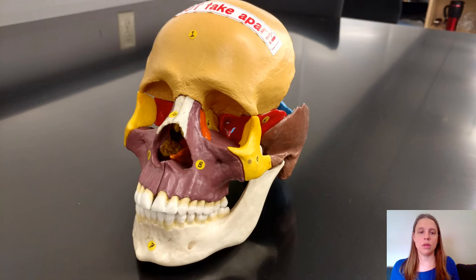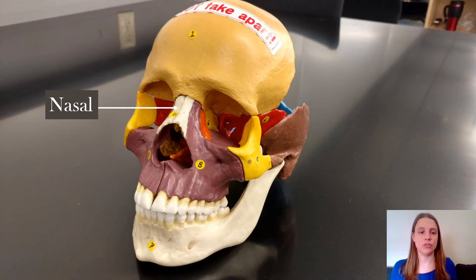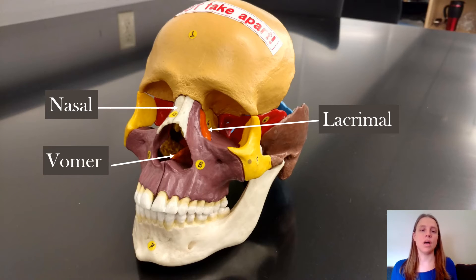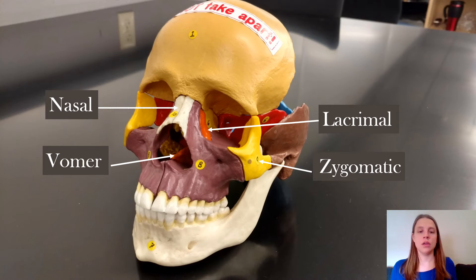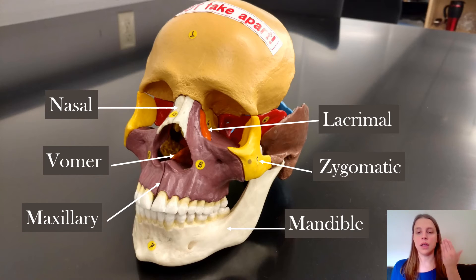Moving down to the bones of your face: this bone of your nose is the nasal bone, in the corners of your eyes are the lacrimal bones, the vomer bone is down here, your cheekbones are your zygomatic bones, in the front of the face are the maxillary bones, and the jawbone is the mandible.